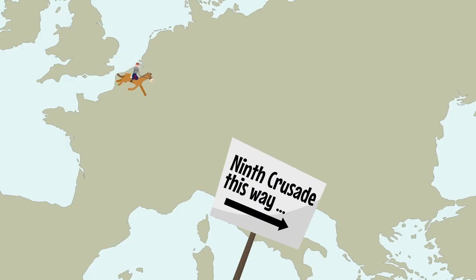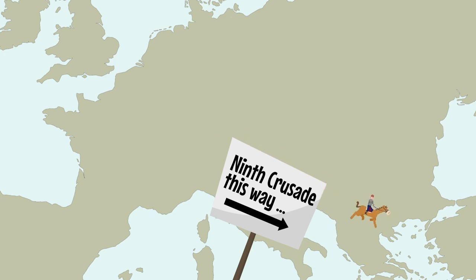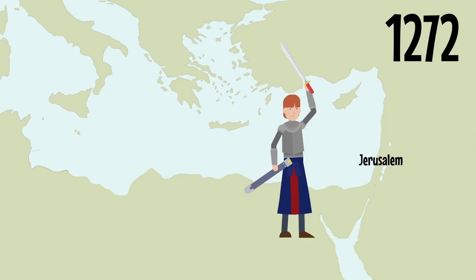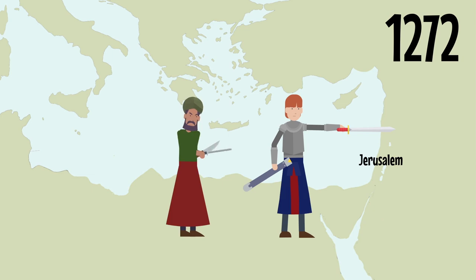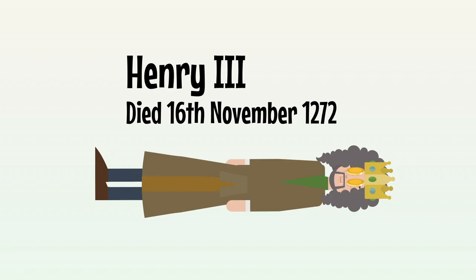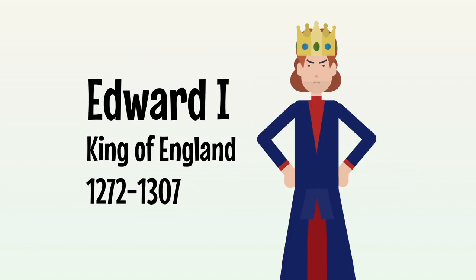The rebellion over, Prince Edward set off to join the Ninth Crusade in 1268, the latest attempt to capture Jerusalem, leading a military campaign but almost falling victim to a Syrian assassin. Finally, in 1272, his father King Henry III died, and Edward was king.